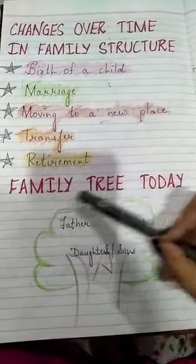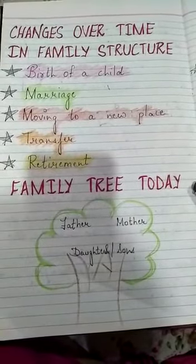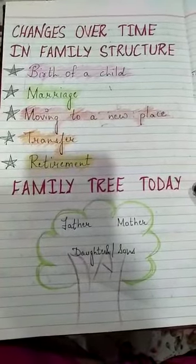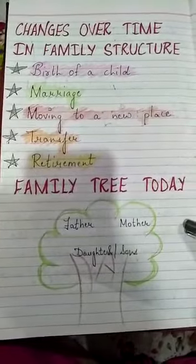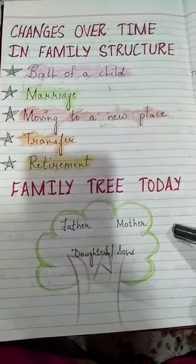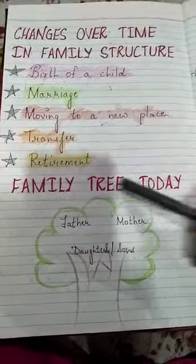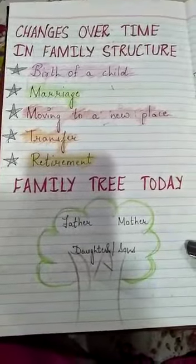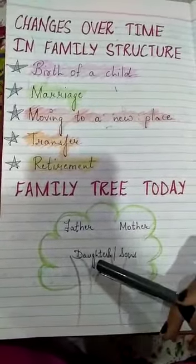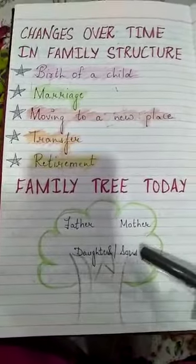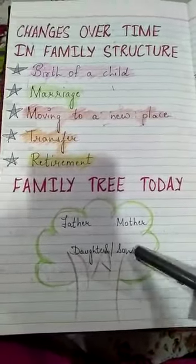Now coming to the family tree. Earlier, people used to live in big joint families, large families, but now the whole family structure has changed. Nowadays, most people prefer to live in a nuclear family. The family tree now consists of father, mother, and daughter or son — it can be daughters and sons.